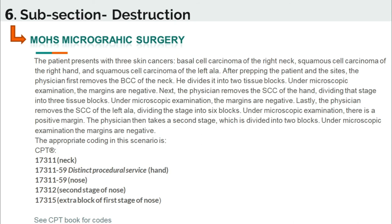For this scenario, remember the guidelines: identify anatomical site and body group, identify the stage, and code for each block. The neck, hand, and nasal ala are in the same body group and belong to code 17311. You will assign 17311 three times with modifier 59 for two of the codes, because the procedure was performed on different anatomical sites on the same day. Because the nose procedure took two stages, you must also assign the add-on code 17312. Since the nasal ala had six tissue blocks — more than five — you assign 17315 for each additional block, applicable to all anatomical sites.